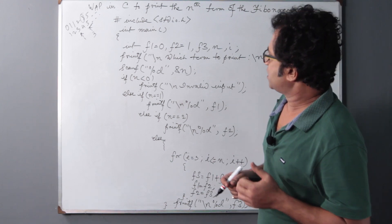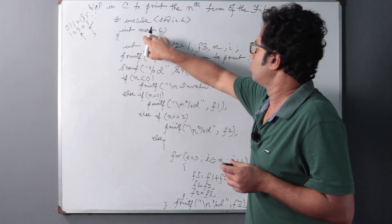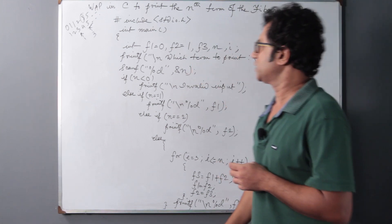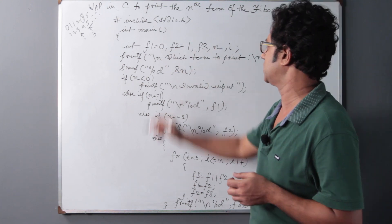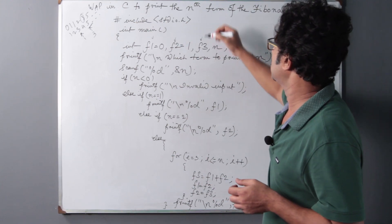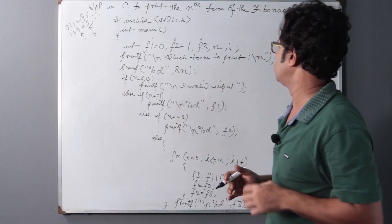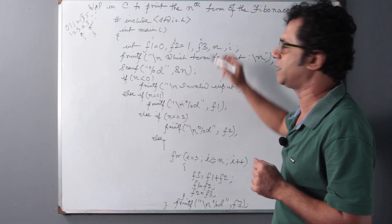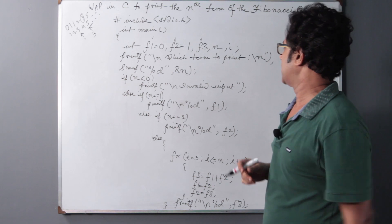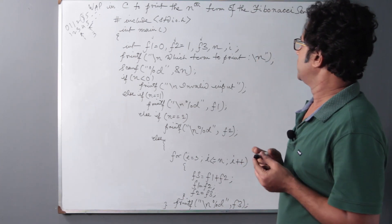Let's get started with the program. We have hash include stdio.h. Then we go to the main portion: int main with the opening brace. We declare all necessary variables — five variables: F1 for the first term of the Fibonacci series, F2 for the second term, F3 for the third term, N for the nth term which the user wants printed, and I as the iteration or loop variable.